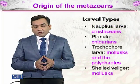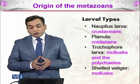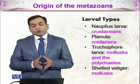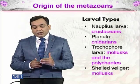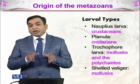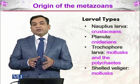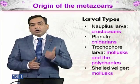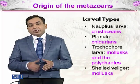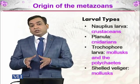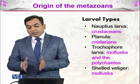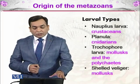We can also classify organisms on the basis of larval types. For example, nauplius larva is present in crustaceans, planula is present in cnidarians, and trochophore larva is present in both mollusks and polychaetes. The trochophore larva being common to mollusks and polychaetes signifies that they share an earlier common ancestor compared to cnidarians or crustaceans. The shell veliger is a developmental stage in mollusks that also helps identify them. If any of these larval remains are found in the fossil record, there is reason to believe those particular organisms or phyla were present in that era.